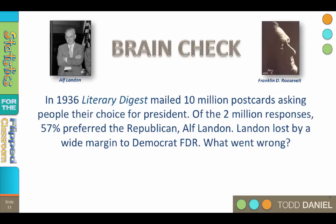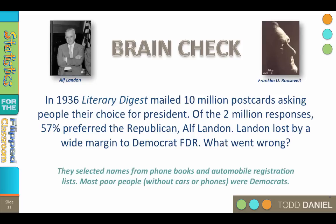The magazine selected names and addresses from phone books and automobile registration lists. But what year was this? 1936 — and what was happening in America in 1936? The Great Depression. Who could afford cars and personal telephones? People with money or jobs. Literary Digest was asking too many of the same people. Most poor and formerly middle-class people — those without cars or phones — voted for the Democratic Party and FDR.